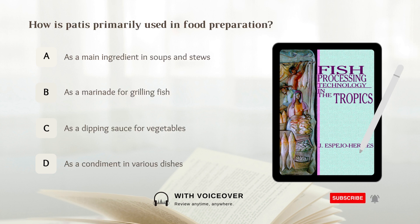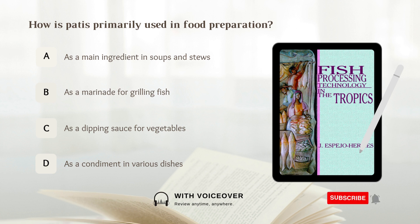How is patis primarily used in food preparation? A. As a main ingredient in soups and stews. B. As a marinade for grilling fish. C. As a dipping sauce for vegetables. D. As a condiment in various dishes. Answer: D. As a condiment in various dishes.